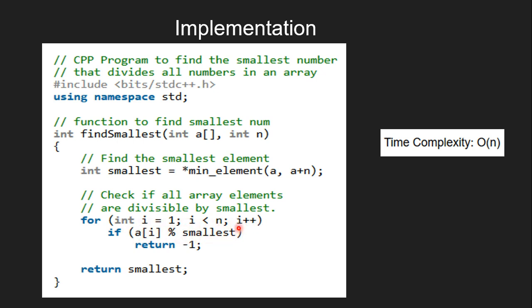Finally, we return the smallest number if it divides all the array elements. Here, the time complexity is O(n) since there is only one loop which is required to check for every element.